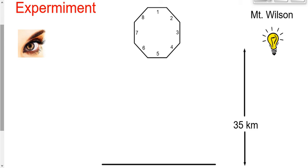Michelson shines a light on Mount Wilson, 35 kilometers away from Mount San Antonio. He flashes a light towards this octagonal-shaped object, which looking at it from above, rotates like this. All of these sides have a plain flat mirror attached to them so that when light hits one of those sides, it will reflect.